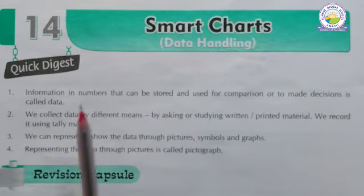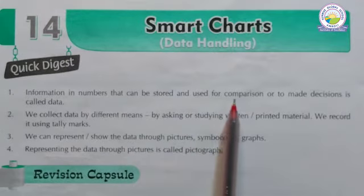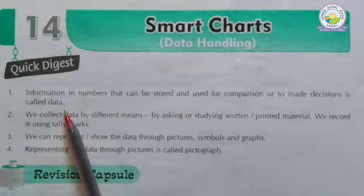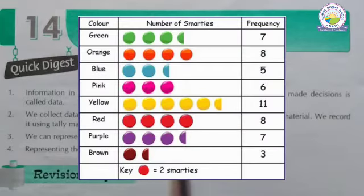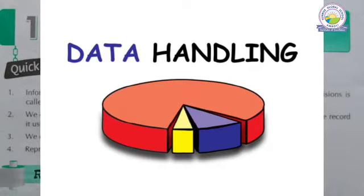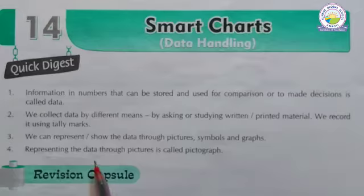Data handling means information in numbers that can be stored and used for comparison or to make decisions — that is called data. We collect data by different means, by asking or studying written and printed material, and we record it using tally marks. We can represent and show the data through pictures, symbols, and graphs. Representing data through pictures is called a pictograph.